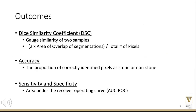The primary outcome measured in our study was the DICE similarity coefficient. This is the standard statistic to evaluate similarity between ground truth and segmented images in computer vision tasks. Sensitivity and specificity were assessed using the area under the receiver operating curve.